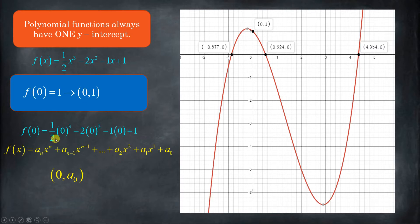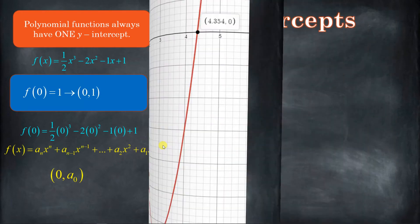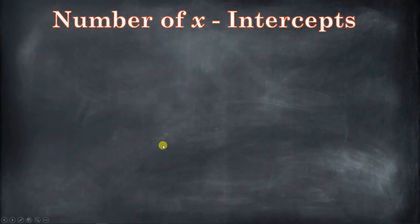So whatever that last value is, when it's in standard form, that is going to be our y-intercept. You get zero minus zero minus zero plus one — just one. The y-intercept is always the last value when in standard form. You probably already knew that, but just to make it clear.